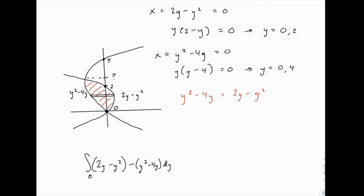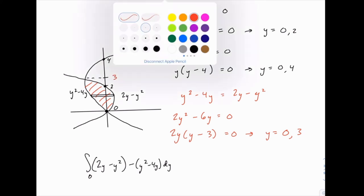So we'll add y squared on both sides and subtract 2y. At this point, we can factor. But 2y factors out. And we find that y equals 0, which we already knew. And y equals 3. So that means the upper limit of integration will be y equals 3.